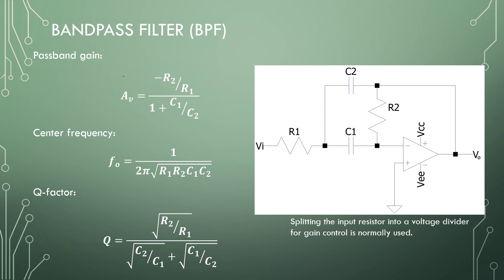If we look at the equations, the passband gain is dependent on all the components and it's inverted. The center frequency is dependent on all the components, and the Q factor is dependent on all the components.